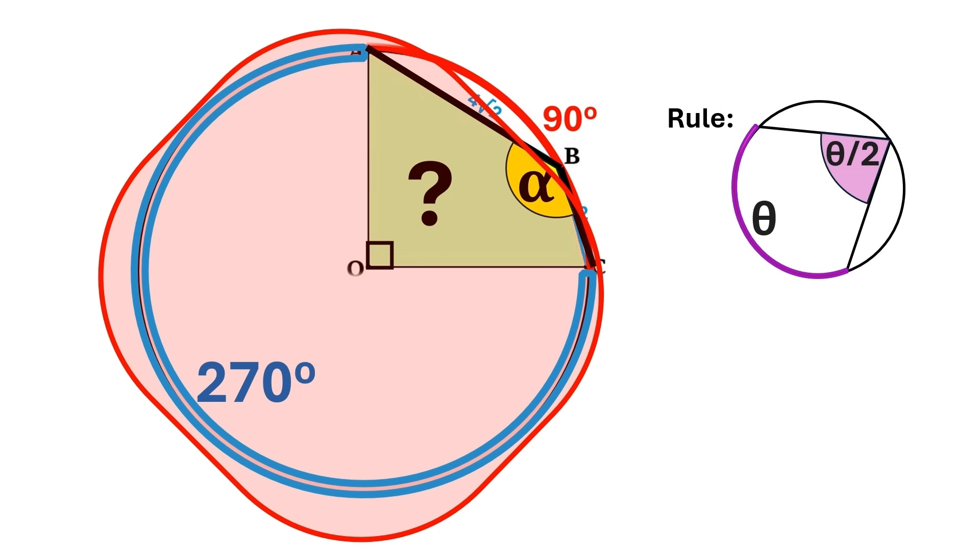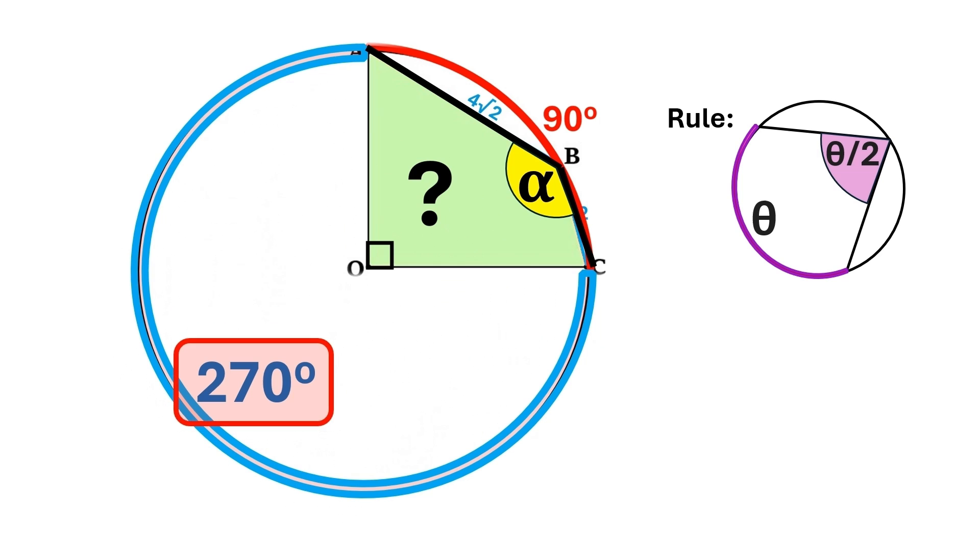That's exactly what we have here. This blue arc is 270 degrees, and this angle alpha is subtended by that arc. So we can conclude that alpha is 270 over 2, which equals 135. Now, we can go back to our original image.